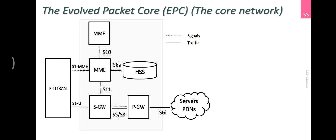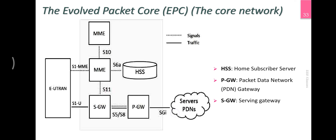EPC is called the Core Network. HSS is called the Home Subscriber Server. From wherever we are — any country or any area — there is a Home Subscriber Server. There is a particular network that we keep locally.